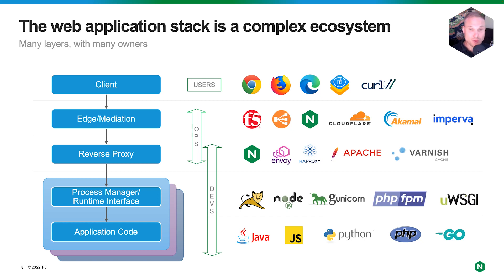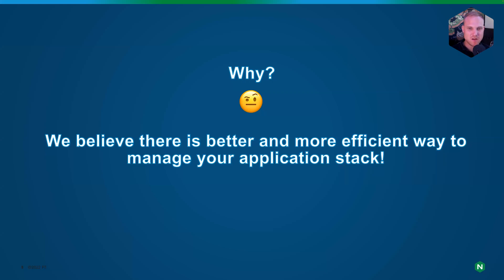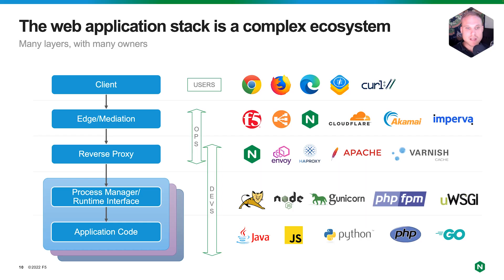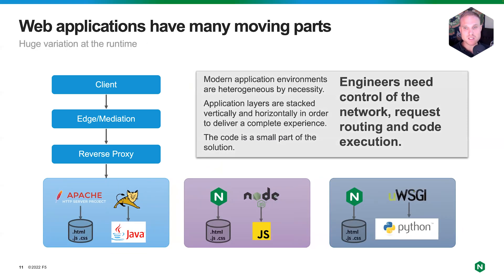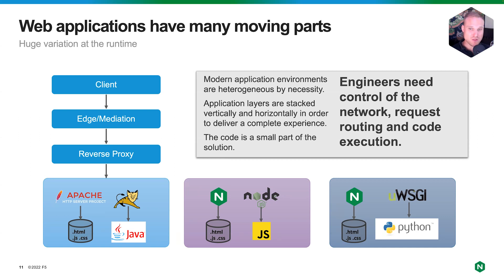With NGINX Unit, we believe there is a better and more efficient way to manage this application stack. By managing, I mean we all need different pieces for our service to make it work and deliver a real benefit for our users. It contains different languages and therefore different application runtimes. And you, as an engineer, need control over the whole stack — the network, the request routing, static file serving, web server parts, proxying, and application runtime. Managing this across five or six different layers on different servers is complex and very painful.